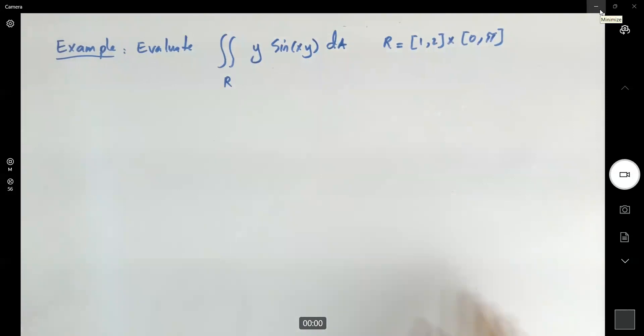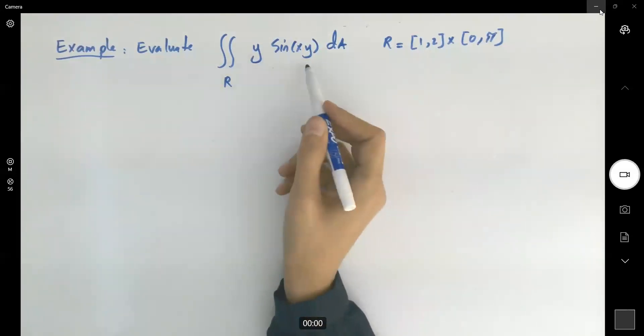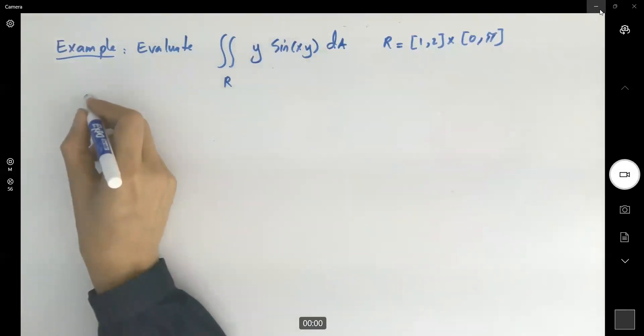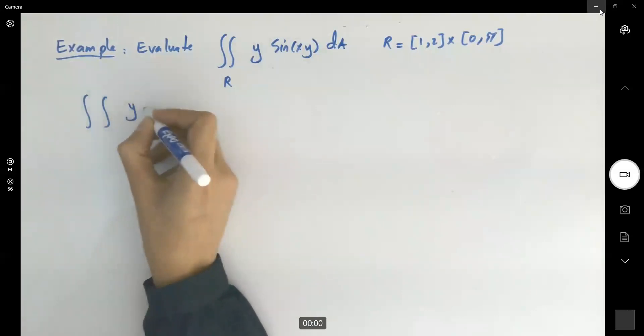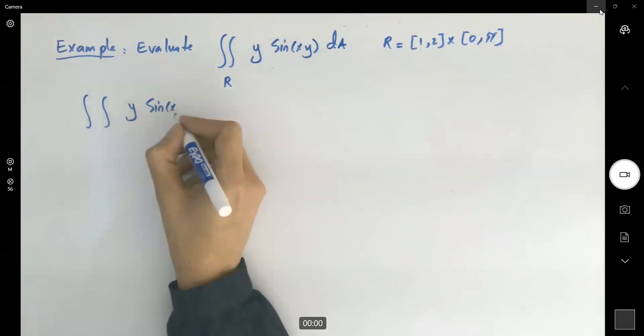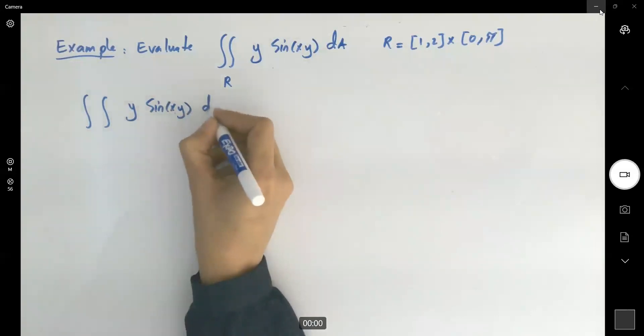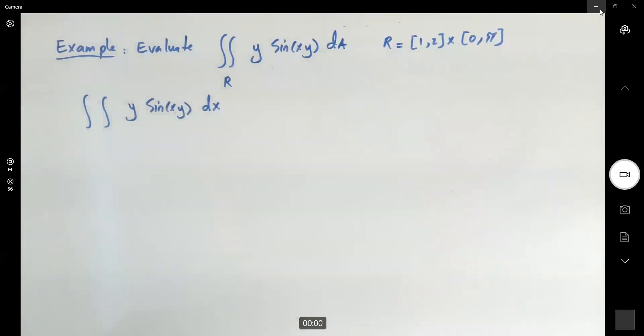So we're going to try to calculate this double integral over region. We know that we have two options. Let's try to see which one is easier to apply. Let us try to calculate this double integral y sine xy with respect to x first, then with respect to y.